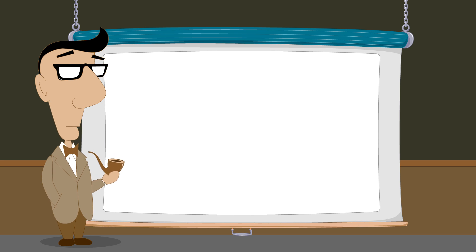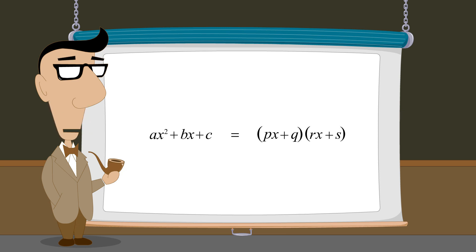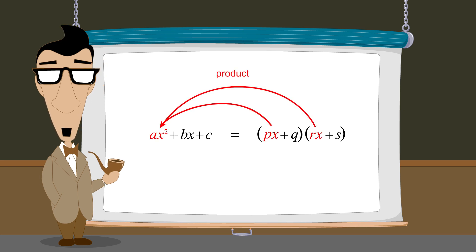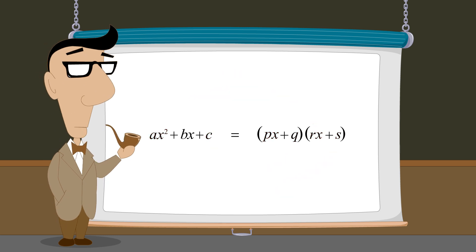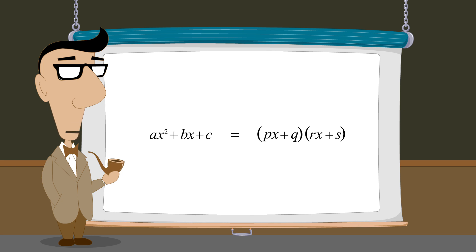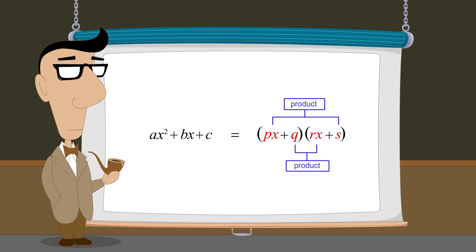So to find a pair of linear factors whose product produces the quadratic, we start by making a list of all the pairs of linear factors whose product of x-terms equals the quadratic's x-squared term and whose product of constant terms equals the quadratic's constant term. Then from these pairs, we look for a pair whose product of outer terms plus product of inner terms is equal to the quadratic's x-term.